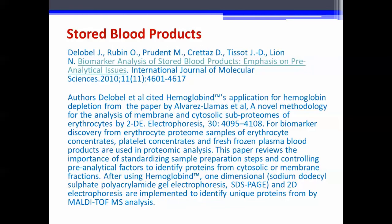Authors Delobel, Rubin et al. published an article in the International Journal of Molecular Sciences titled Biomarker Analysis of Stored Blood Products: Emphasis on Pre-Analytical Issues. Authors Delobel et al. cited hemoglobin application for hemoglobin depletion from the paper by Alvarez Lamas et al., a novel methodology for the analysis of membrane and cytosolic subproteomes of erythrocytes by 2DE, cited in the journal Electrophoresis. For biomarker discovery, erythrocyte proteome samples of erythrocyte concentrates, platelet concentrates, and fresh frozen plasma blood products were used in proteomic analysis.